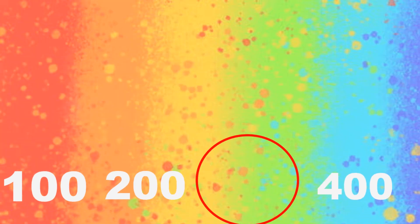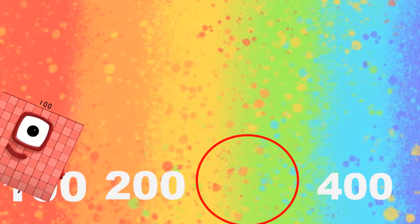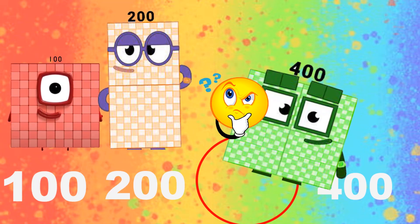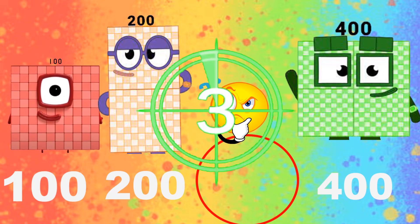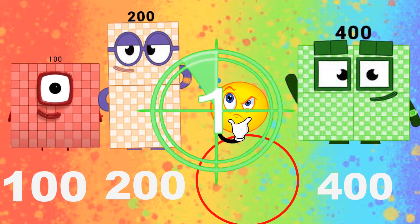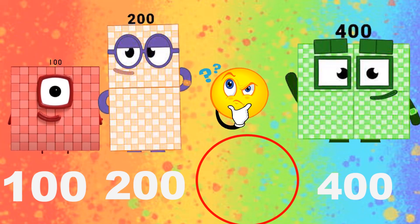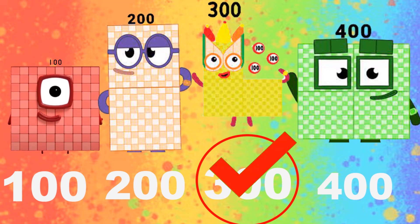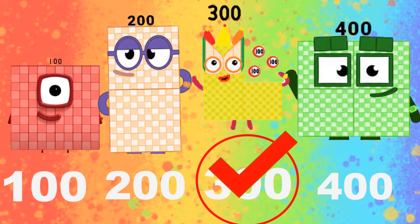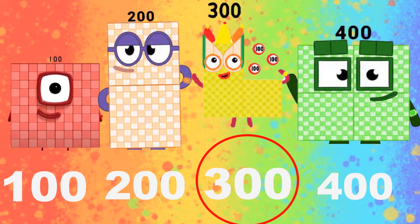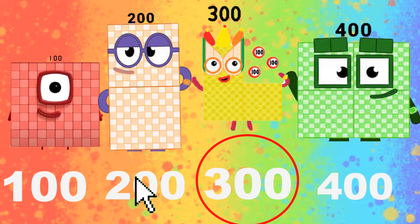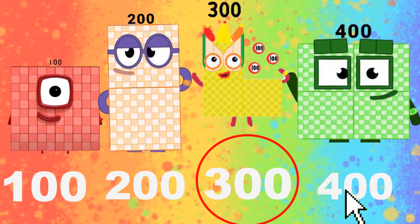One number is missing: 100, 200, _, 400. 3, 2, 1 — the answer is 300. Let's count the number sequence: 100, 200, 300, 400.